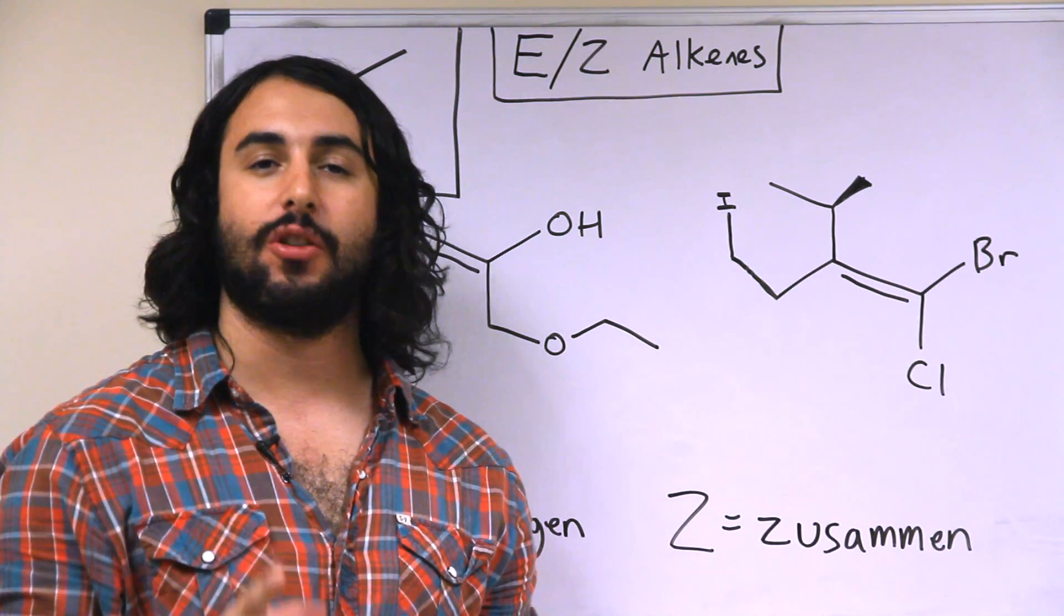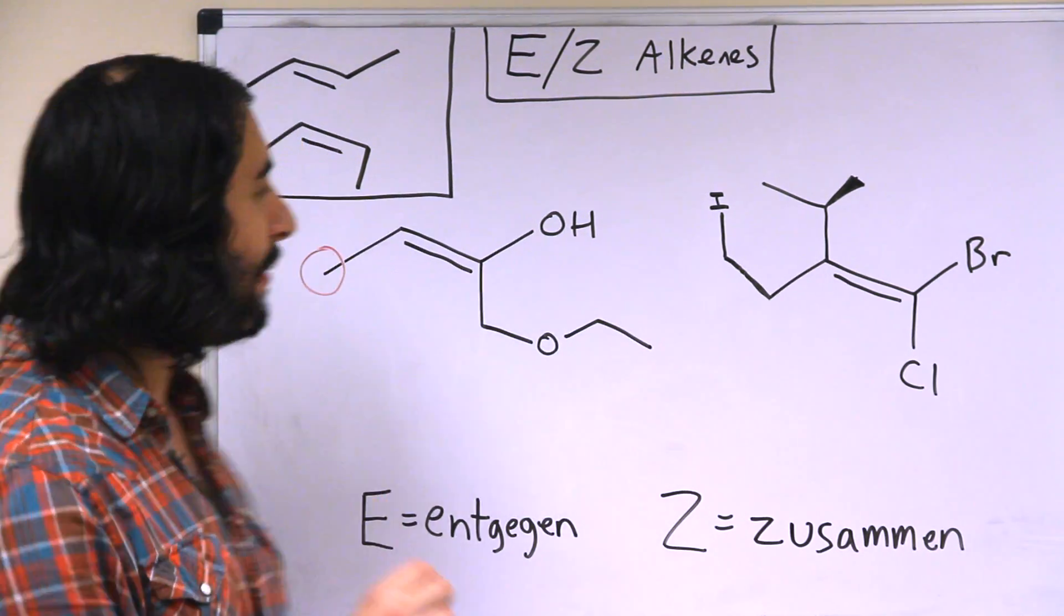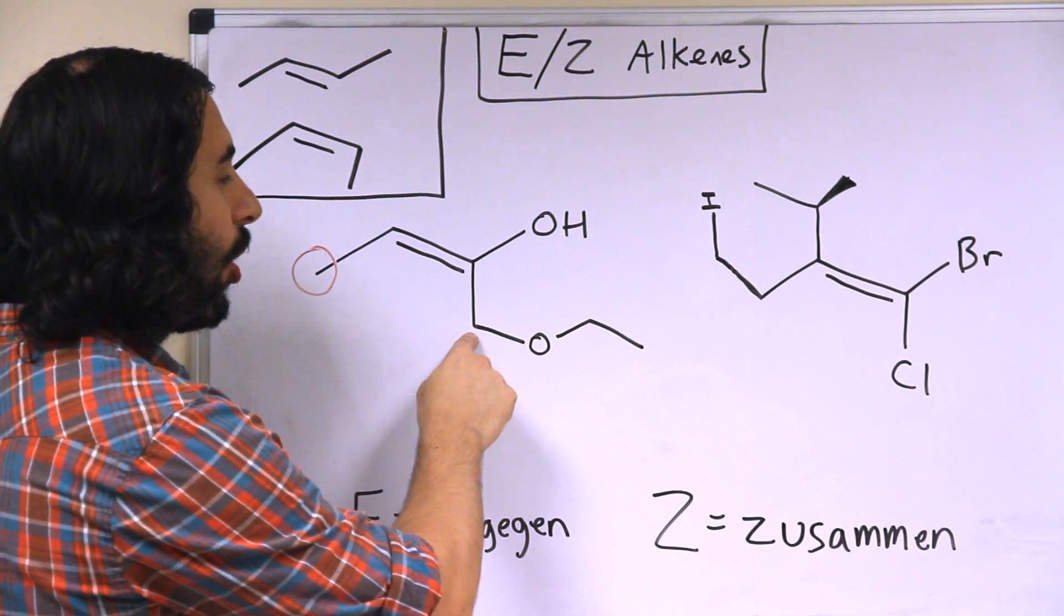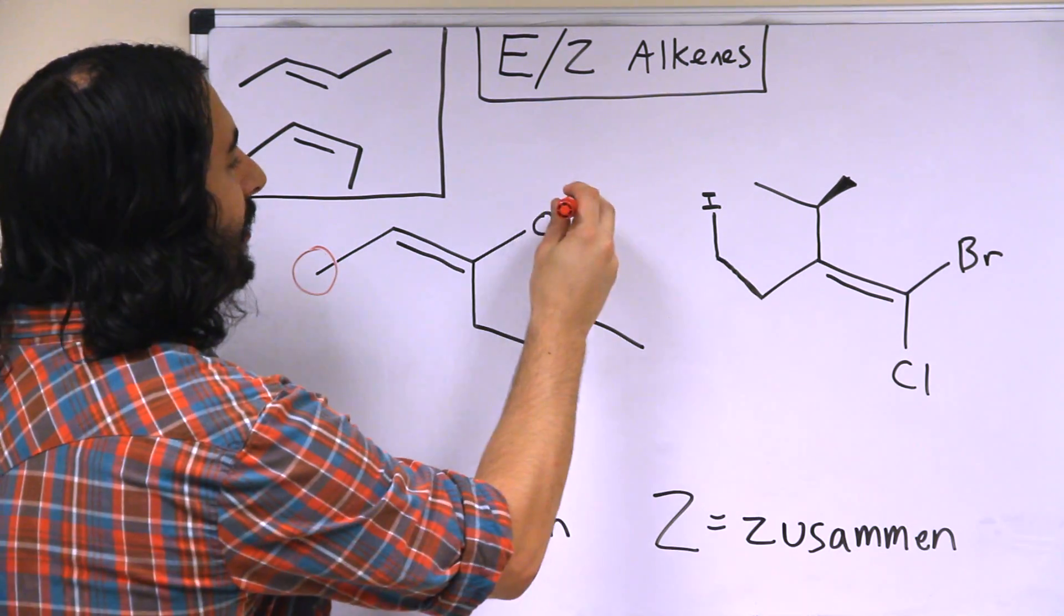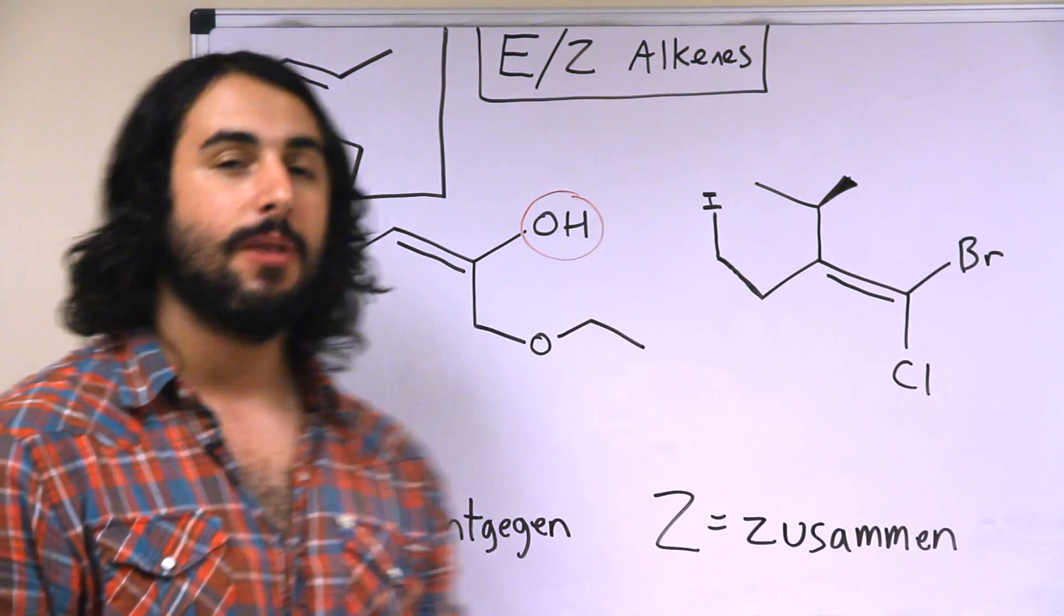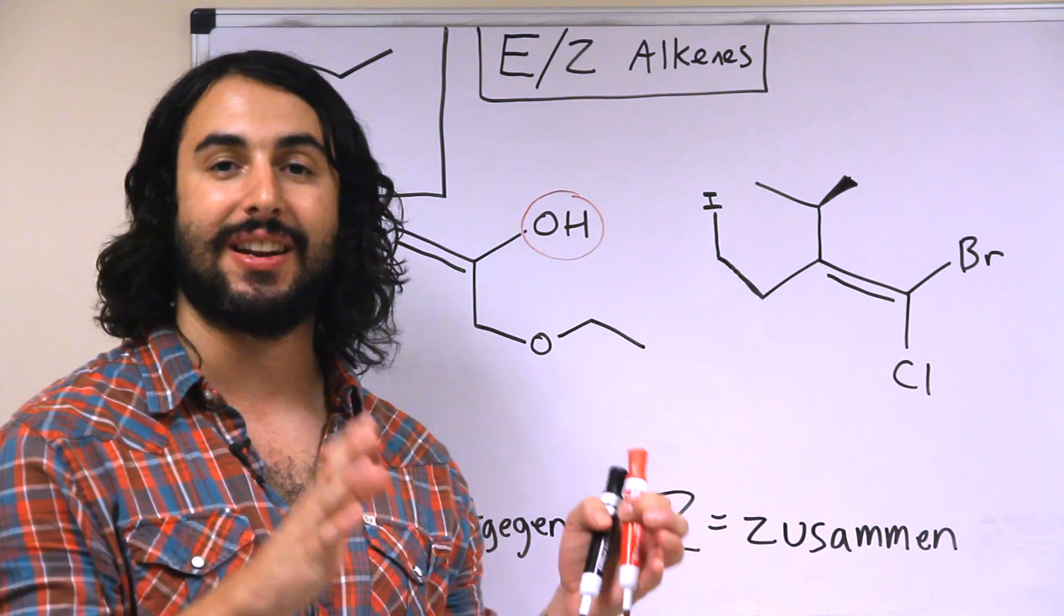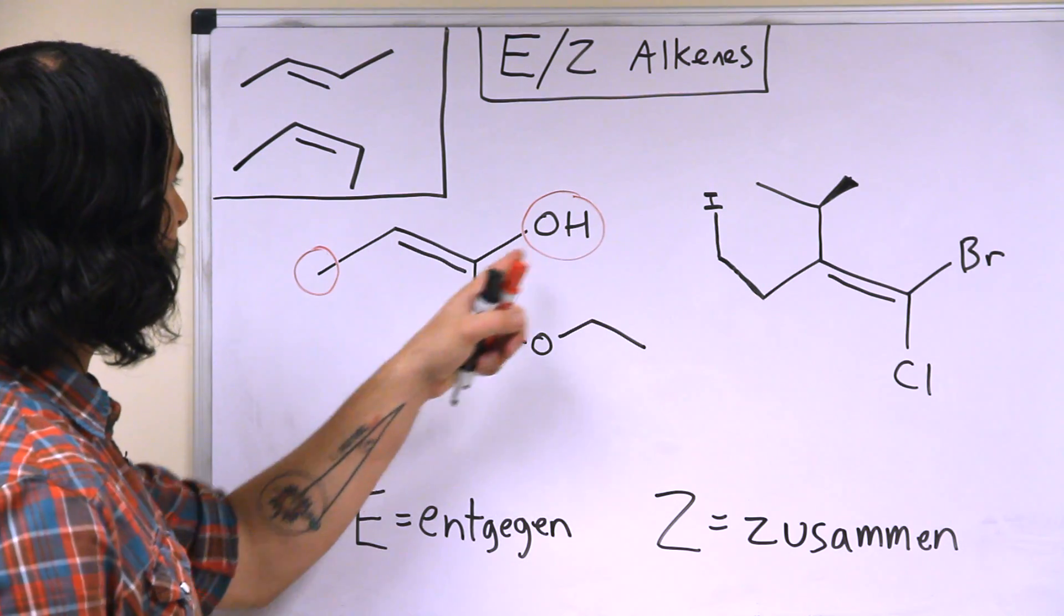Recall we're going one atom at a time, so actually this carbon is bound to oxygen, and it is bound to carbon, and so this group takes priority actually, and for no other reason other than oxygen is heavier than carbon. So we must go one atom at a time.